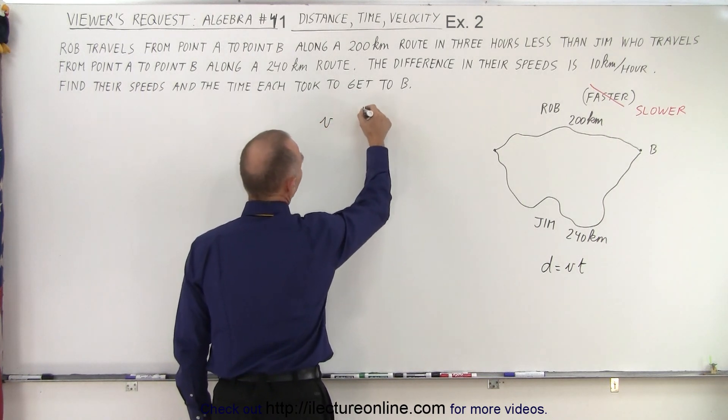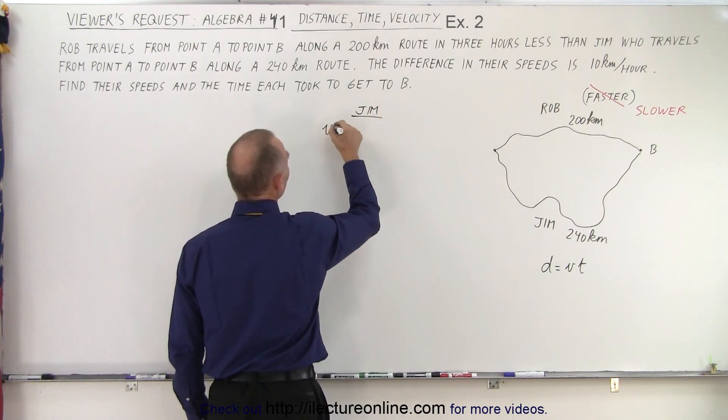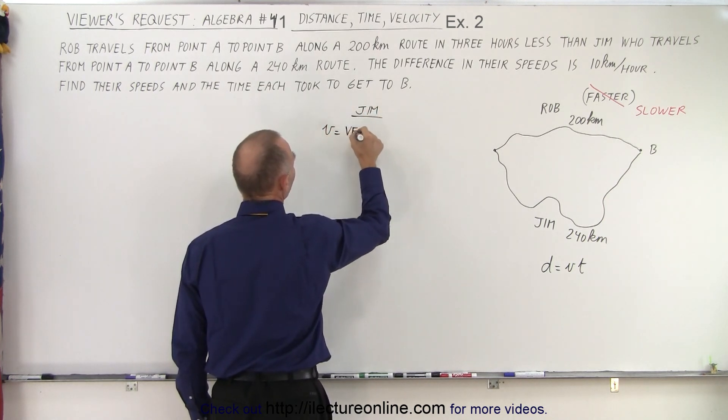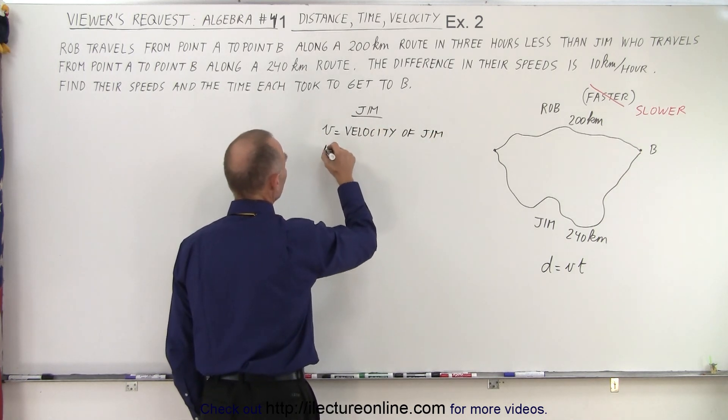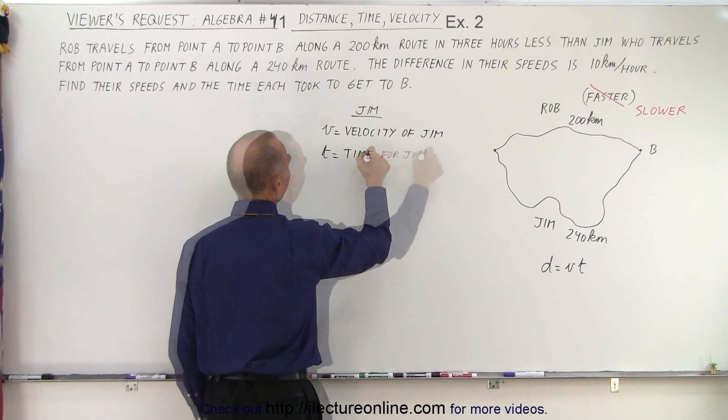So let's start with velocity. Let's start with Jim. So we're going to say that V is equal to the velocity of Jim. And for the time for Jim, let T equal the time for Jim.